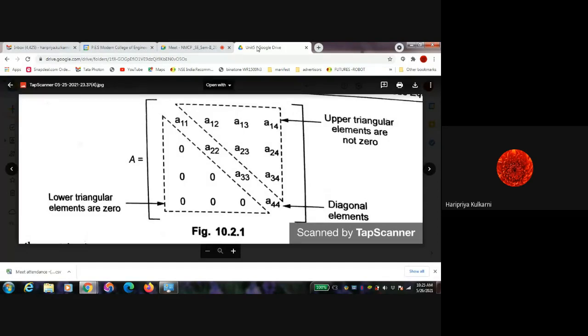For example, a11, a12, a13, a14 are the coefficients of my first equation, then second, third, fourth. So here if I make a triangle, suppose A is my matrix. If I make a triangle then this is a lower triangle, this is upper triangle, okay?